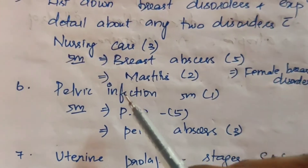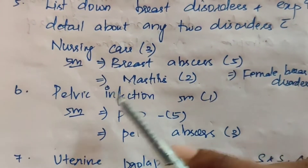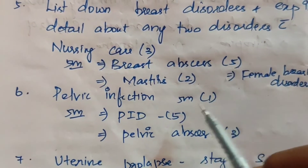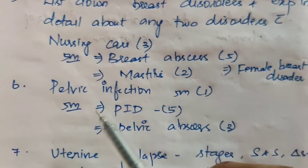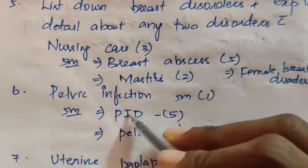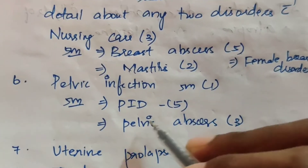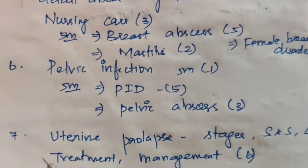Sixth one: pelvic infection — for 15 marks and 5 marks. Pelvic inflammatory disease (PID) — five times. Pelvic abscess — three times.